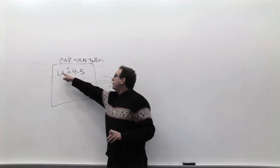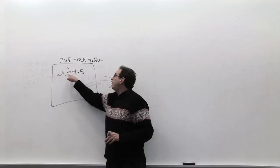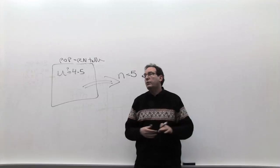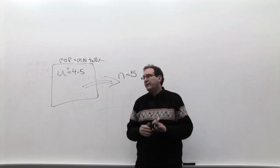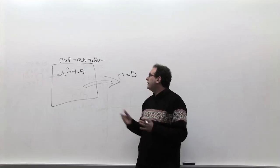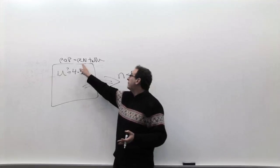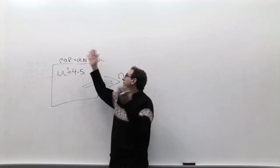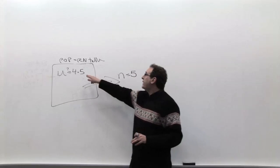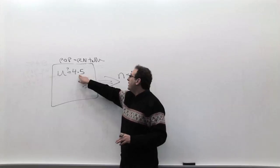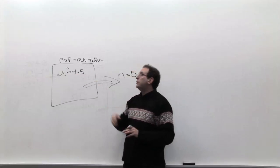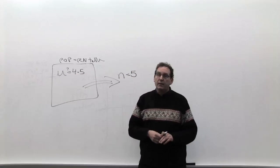Somebody asks: does my random number table truly have an average of 4.5? That's the question you're trying to answer. You really want to know. In other words, you know what the right answer is supposed to be, and you want to know: is my population the right answer or not?